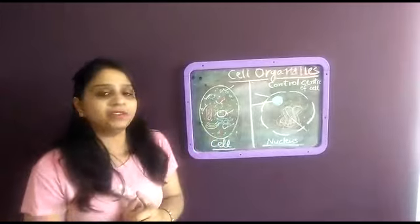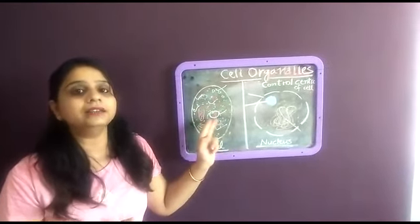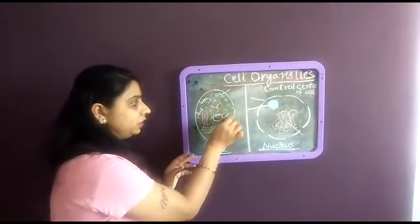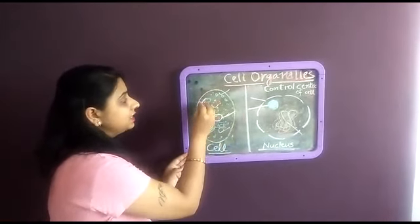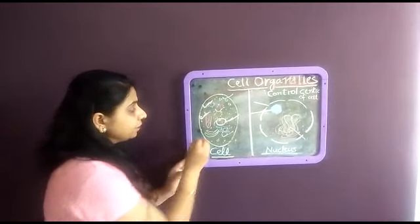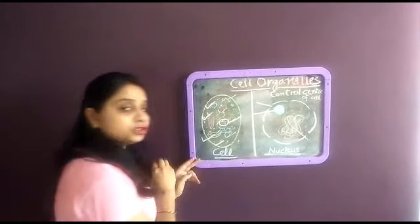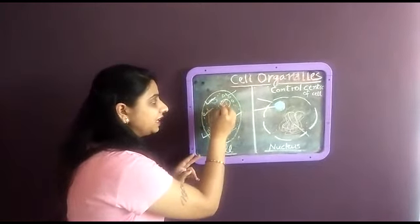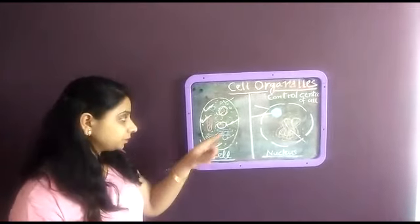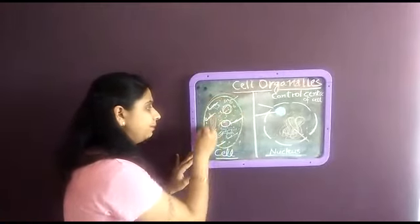So now we will discuss which type of cell organelles are present in a cell. First of all it is the nucleus. Then these are the lysosomes. This is the mitochondria. This is the golgi body. This is the ribosome. This is the cell vacuole and in plant cells it is the chloroplast and this is the cell membrane.